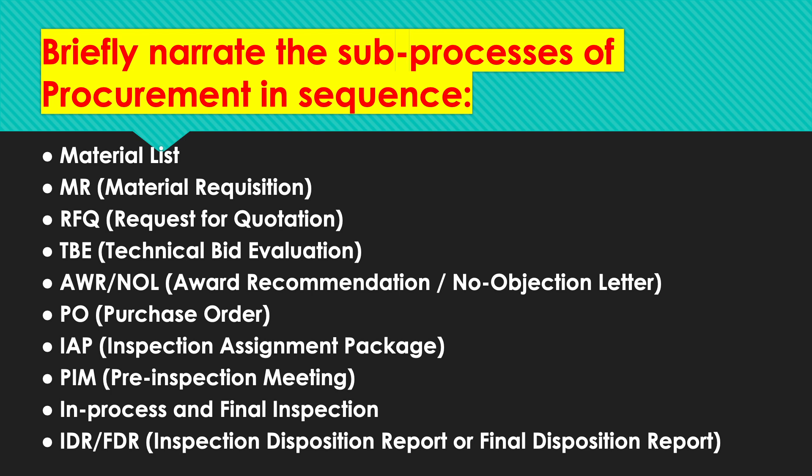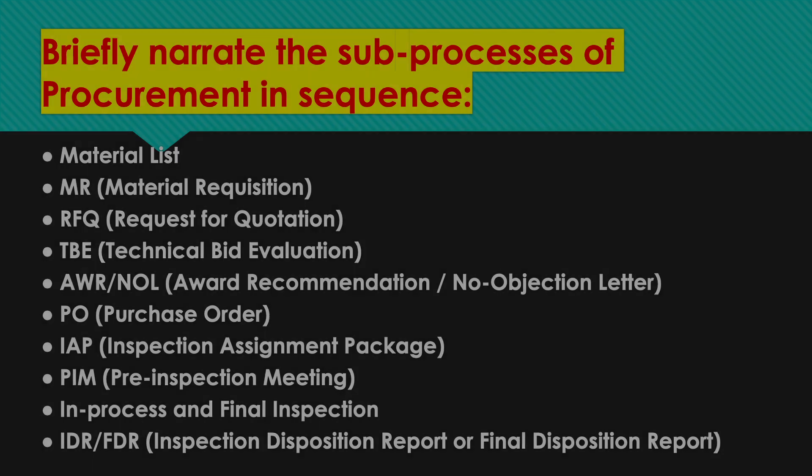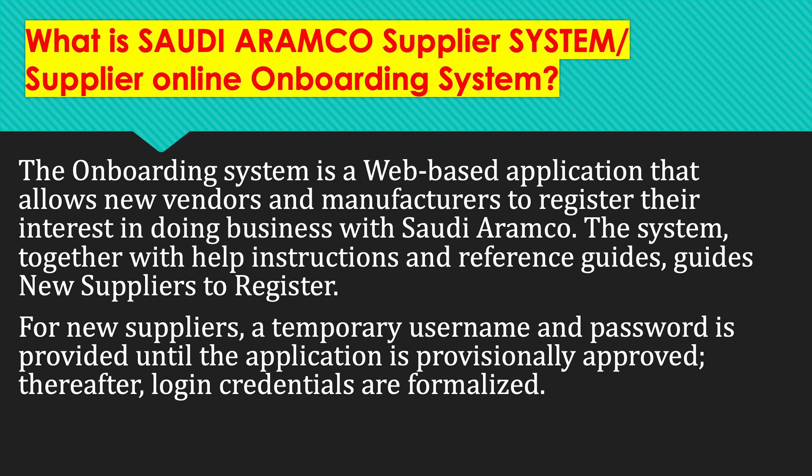The inspection assignment package is submitted to the client. With the IAP, a pre-inspection meeting is conducted together with the manufacturer, the vendor, and the client inspection team to finalize the ITP and start work. When work is ongoing, in-process and final inspections take place. After the material is released, the IDR and FDR are submitted to close the procurement process.